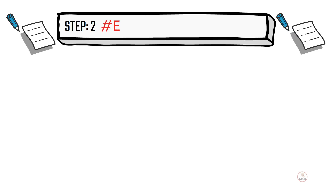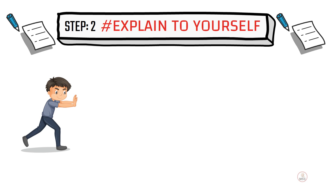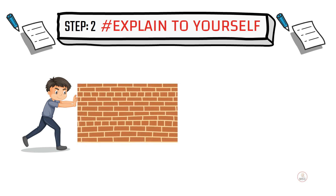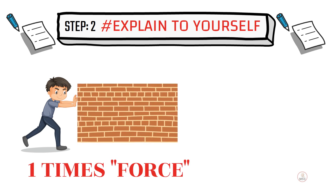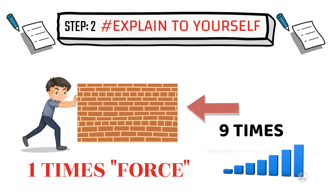Step 2: Take a blank paper and explain the concept. For example, Newton's Third Law — if you push a wall, you apply 1x force, then 2x, 3x, 4x, up to 9 times. The wall pushes back with the same force equally in the opposite direction. Because of the equal and opposite reaction.